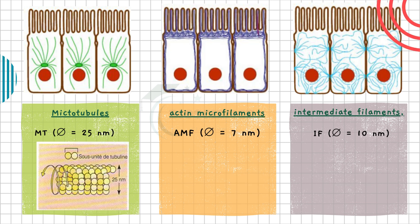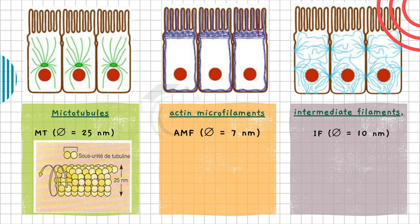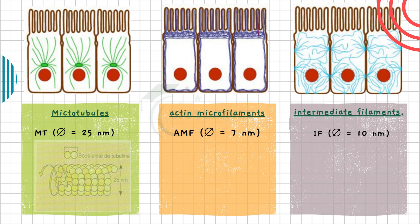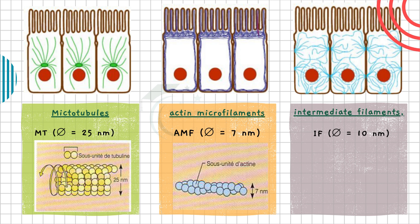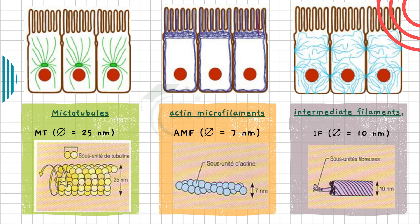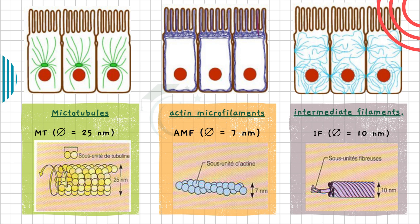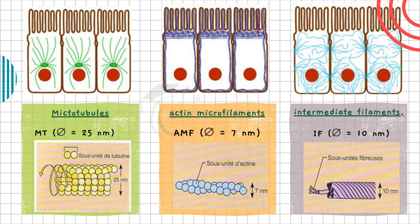Structurally, the basic subunit of microtubules is tubulin, represented by yellow and green spheres in the image. Microtubules are formed by the assembly of alpha and beta tubulin dimers, which organize into a hollow tube. The actin microfilaments are composed of actin subunits, shown as small blue spheres. Unlike microtubules and actin microfilaments, intermediate filaments are not made up of globular subunits but rather of elongated fibrous proteins that coil together to form resistant structures.